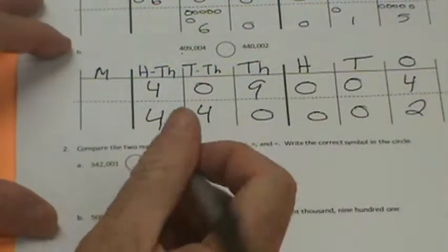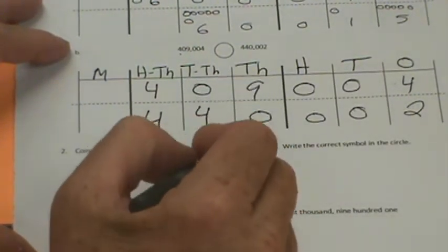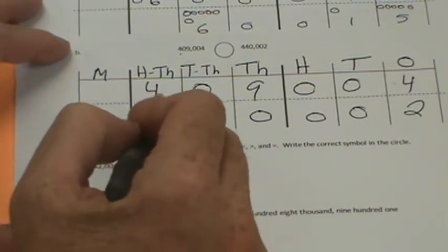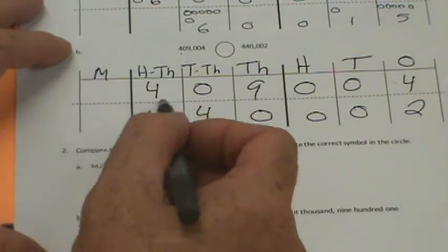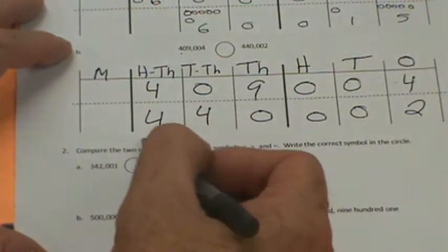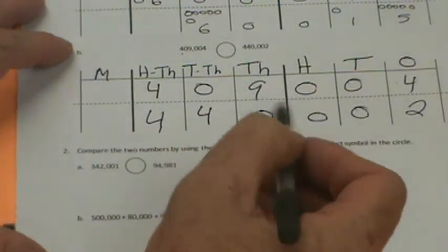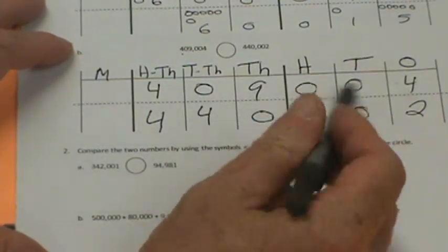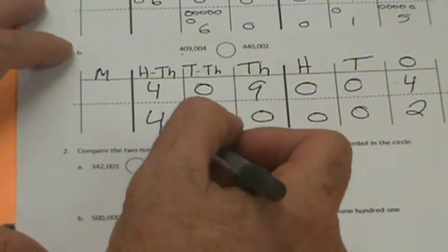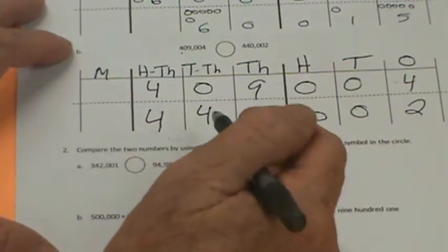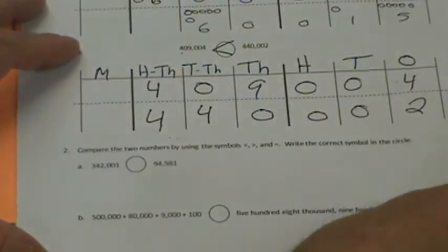So greater, equal, equal, greater, greater, greater, and equal. We can go this way down the line though. We see that this is 40,000 and there's 44,000. We all know 44 is greater than 40. So these numbers don't even have no concern to us. As soon as you hit one that's greater than the other, you know that this number is greater. So 440,000 is greater than 409,000.